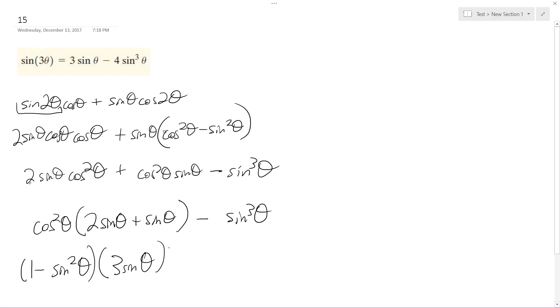Well, that makes things easier. Minus sine cubed theta. This becomes 3 sine theta minus 3 sine cubed theta minus sine cubed theta.